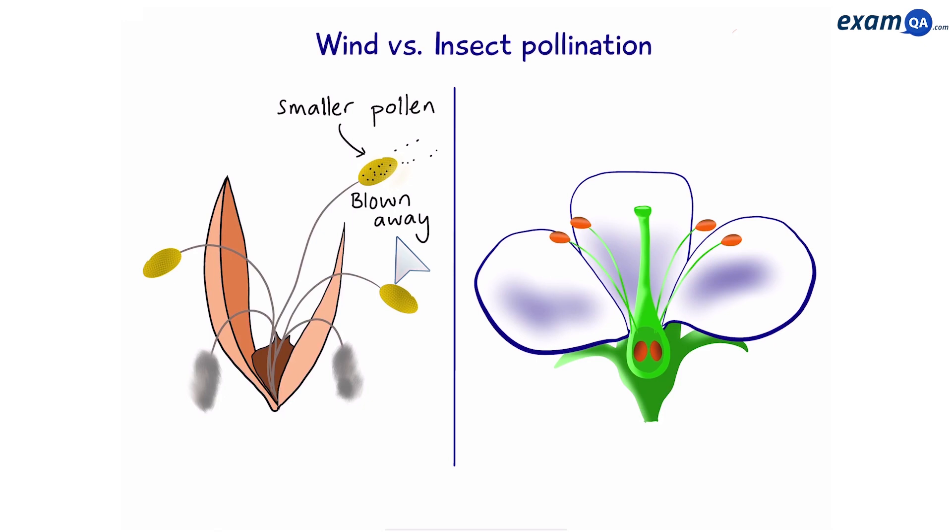Wind pollinated flowers have many smaller pollen. This is important because wind can blow it away easily. However, this is not great for everyone, as it can cause hay fever for some human beings. Also notice they have very boring flowers because they are not interested in attracting the attention of insects.